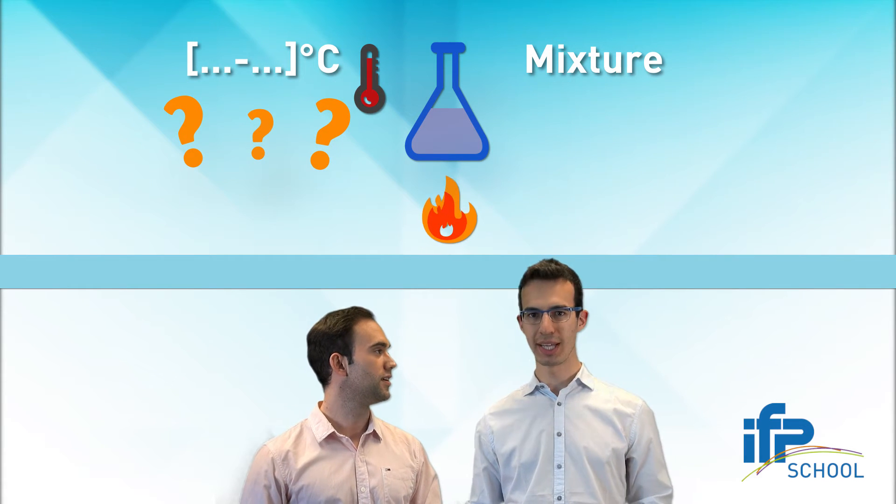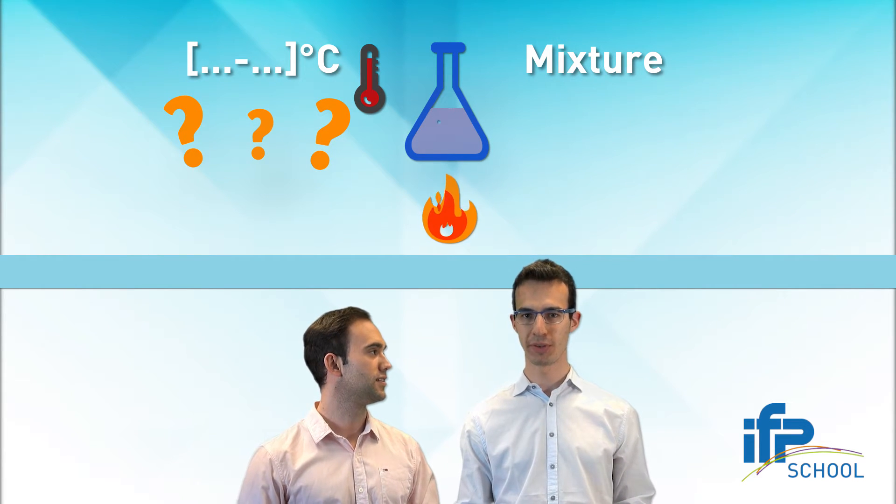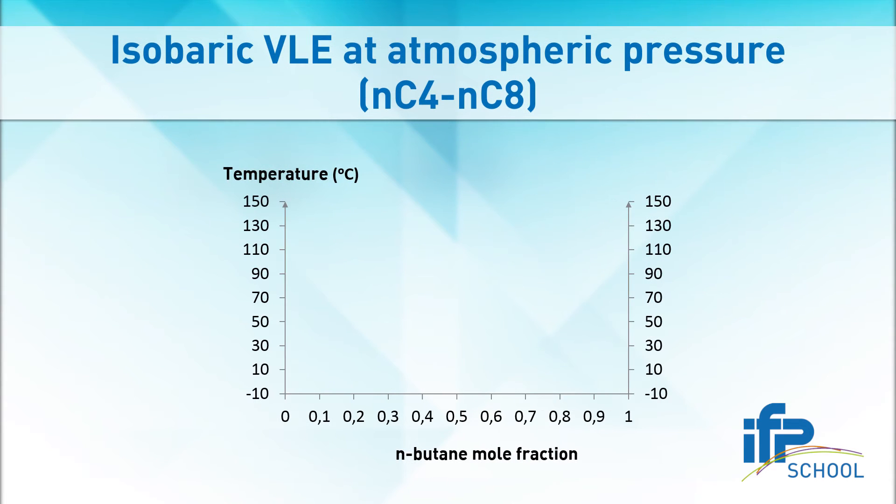A range of temperatures? Do you mean that gasoline begins to boil at one temperature and ends at another one? You see this graph? Well, it's a bit simplified since we here consider a mixture of only two components, but the idea is the same when there are many.